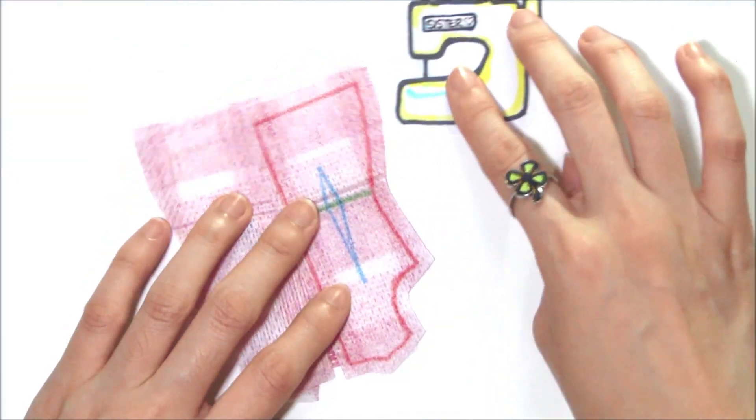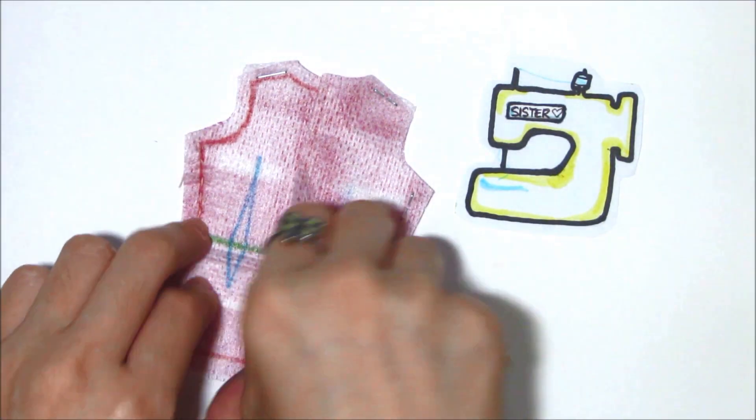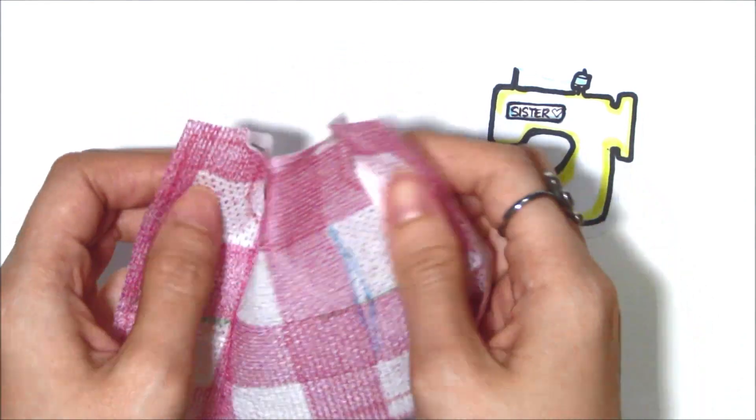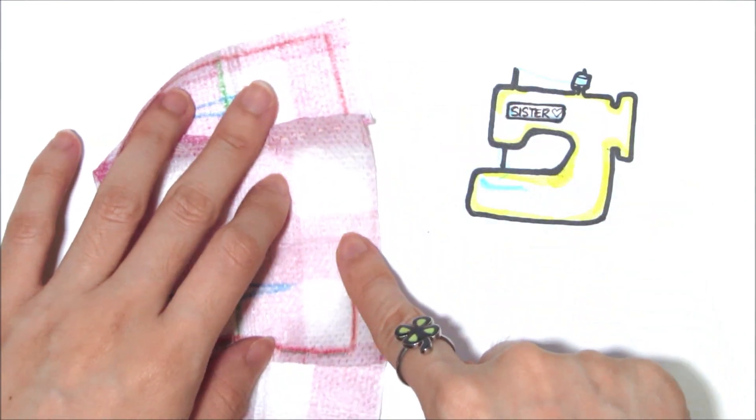And sew and sew and sew. After you're done, flip the costume inside out. Then hem the bottom edges.